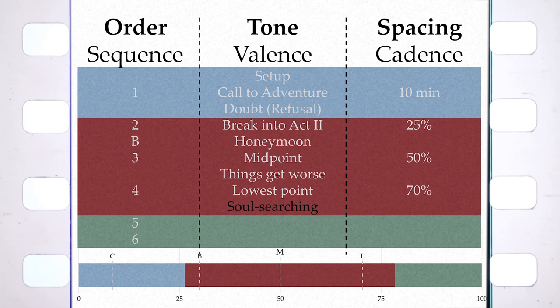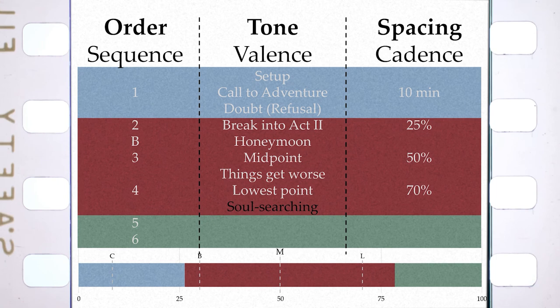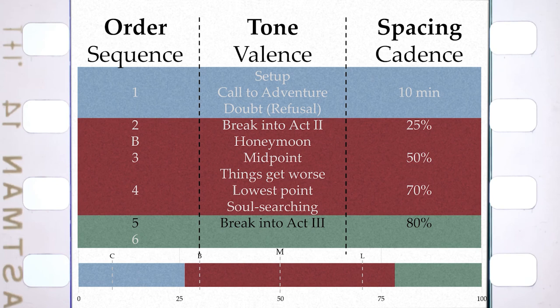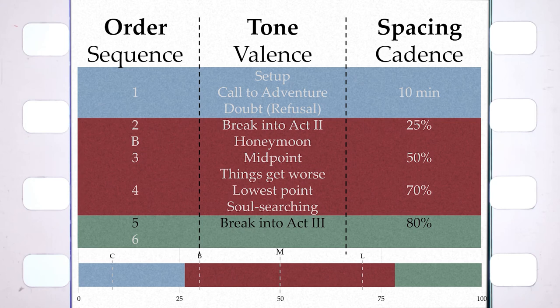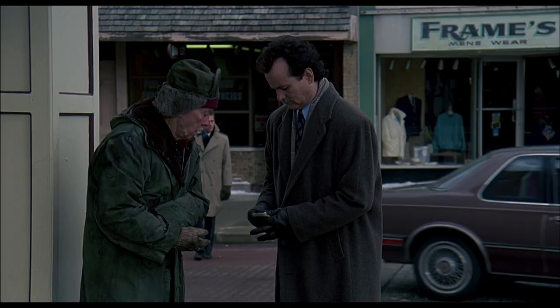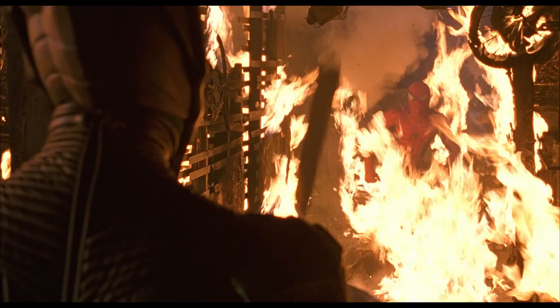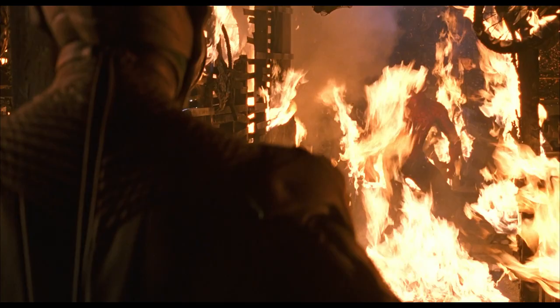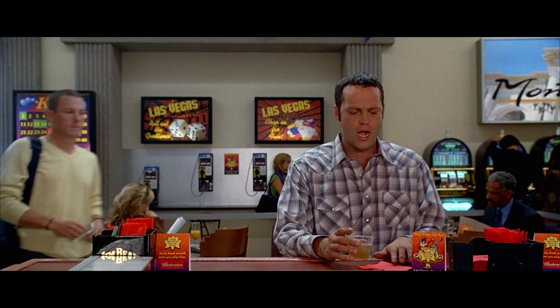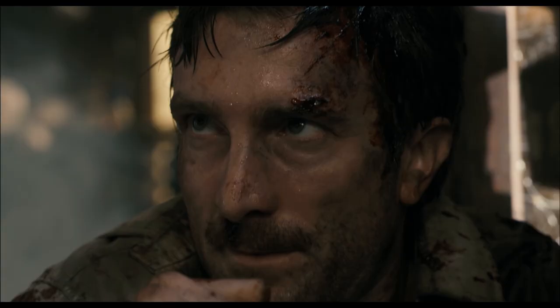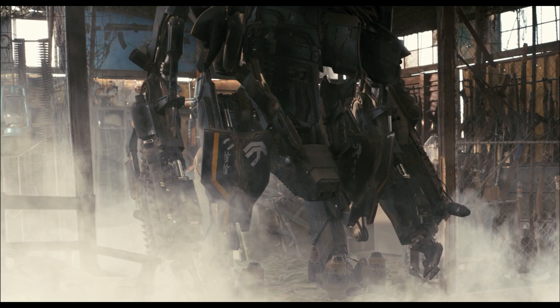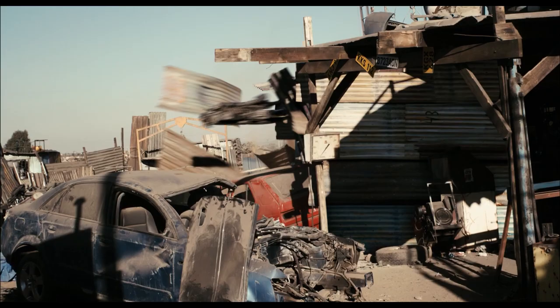In Groundhog Day, Phil finally realizes and verbalizes the truth: he's not good enough to deserve someone like Rita. At the end of this sequence, the protagonist has done their soul-searching. They have found what they need to go on — often with the help of the B character — and they've survived act two and changed as a result. The beat at the end of this sequence is the fifth out of six: the moment where the protagonist breaks into act three. On average this event comes 78.48% into a movie — so let's call it four-fifths. This beat is usually accompanied by some discussion of the theme.